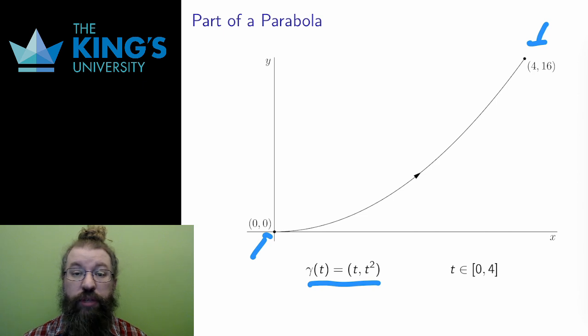Therefore, there are many, in fact infinitely many, parametrizations of the same shape, each describing movement along the shape at a different rate.